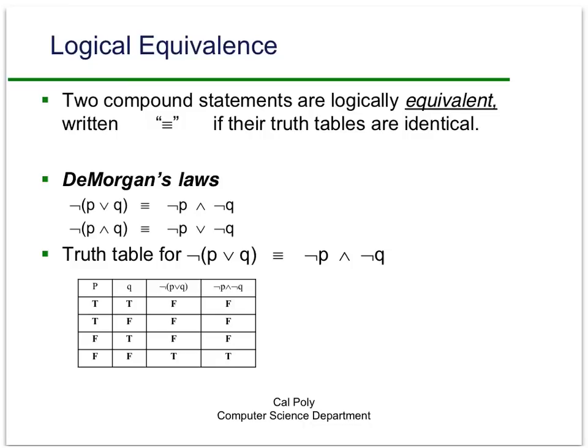This video talks about a very important concept in propositional logic called logical equivalence. Two statements are intuitively equivalent if they mean the same thing. In propositional logic, we say that two compound statements are logically equivalent — written with a triple line — if their truth tables are identical. This means they will have the same values no matter what the values are of the propositional variables that make them up.